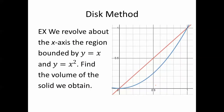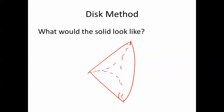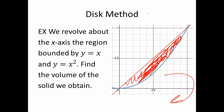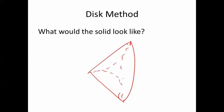Let's say we revolve about the x-axis the region bounded by y equals x and y equals x squared. Find the volume of the solid we obtain. This one is different because we're finding the volume of a solid between two curves, not between a curve and the x-axis. The solid would look like a cone that's been hollowed out, because you're not rotating the entire triangle about the x-axis — just the region between the two curves.